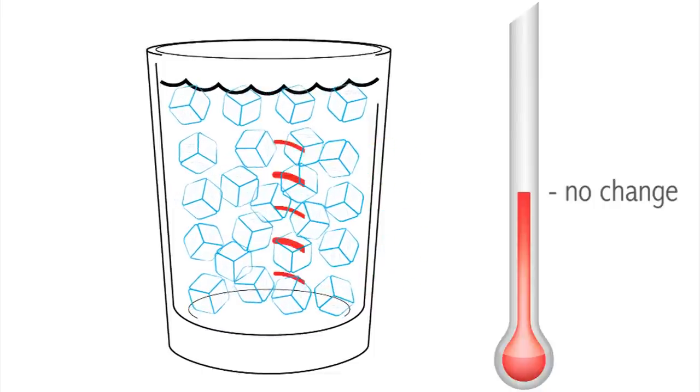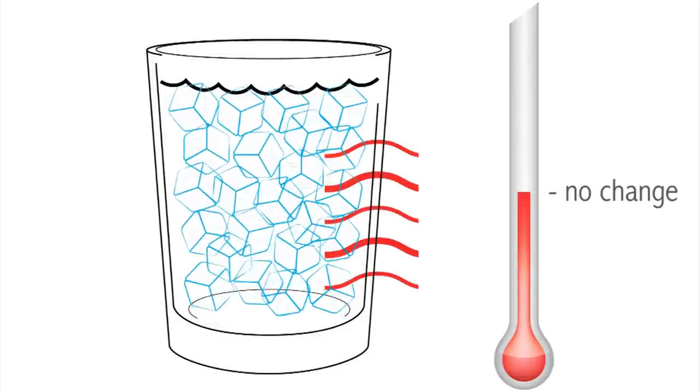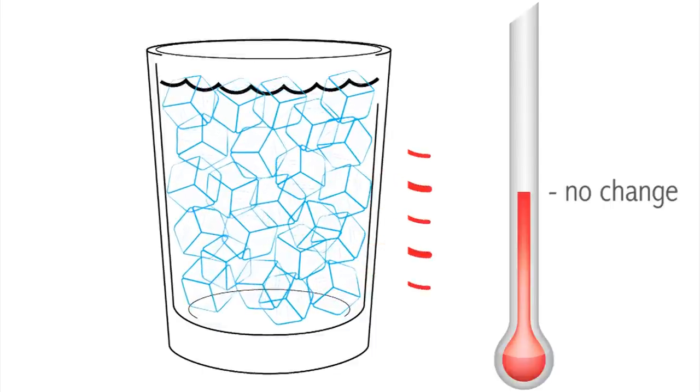At the ice point, a loss of heat results in more water freezing, while any heat gained just melts more of the ice.